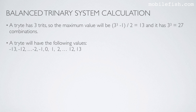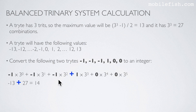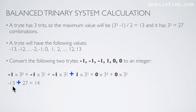A tryte will have the following values, from minus 13 to 13. Let's convert the following 2 trytes to an integer. This is tryte 1 and this is tryte 2. We will do the same calculation as before. This minus 1 is this minus 1, and this 0 is this 0. The values 0, 1, 2, 3, 4, 5 represent the positions. If you calculate the first tryte, you will get the value minus 13. And if you calculate the second tryte, you will get the value 27. If you add these two values together, you will get the value 14. These two trytes represent the decimal value 14.